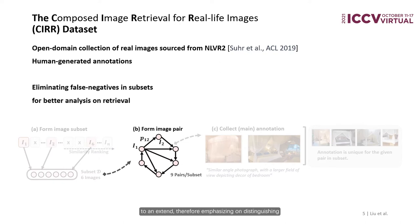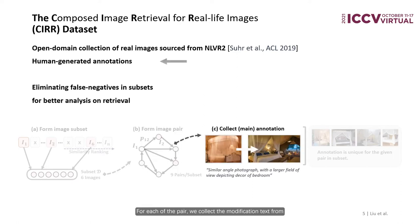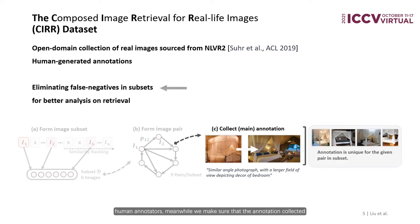Therefore, emphasizing on distinguishing between fine-grained vision and language cues, we intentionally draw the pairs such that they form consecutive paths that might benefit future research on dialogue systems. For each pair, we collect the modification text from human annotators, while making sure that the annotations collected do not create any false negatives within the same subset.